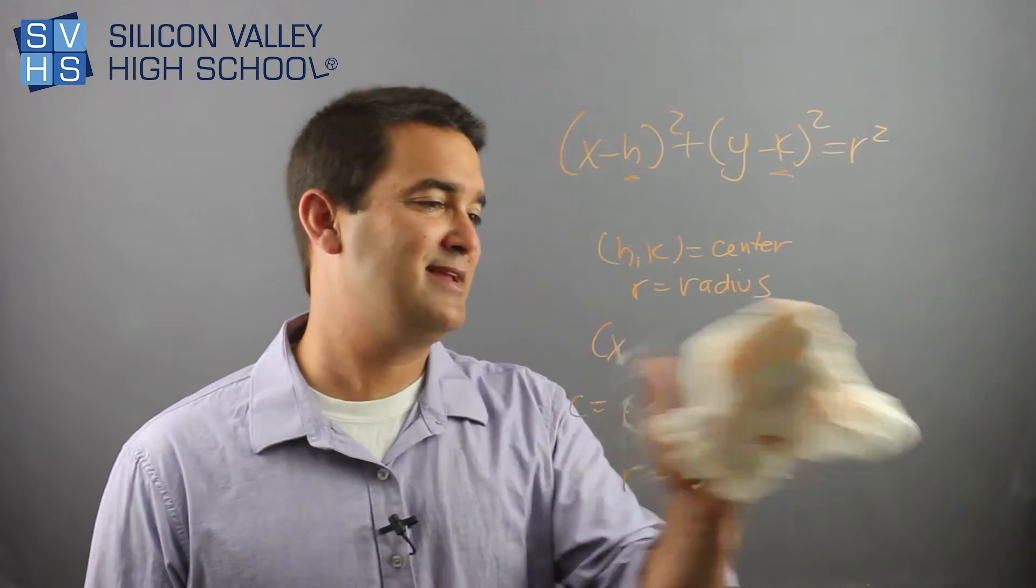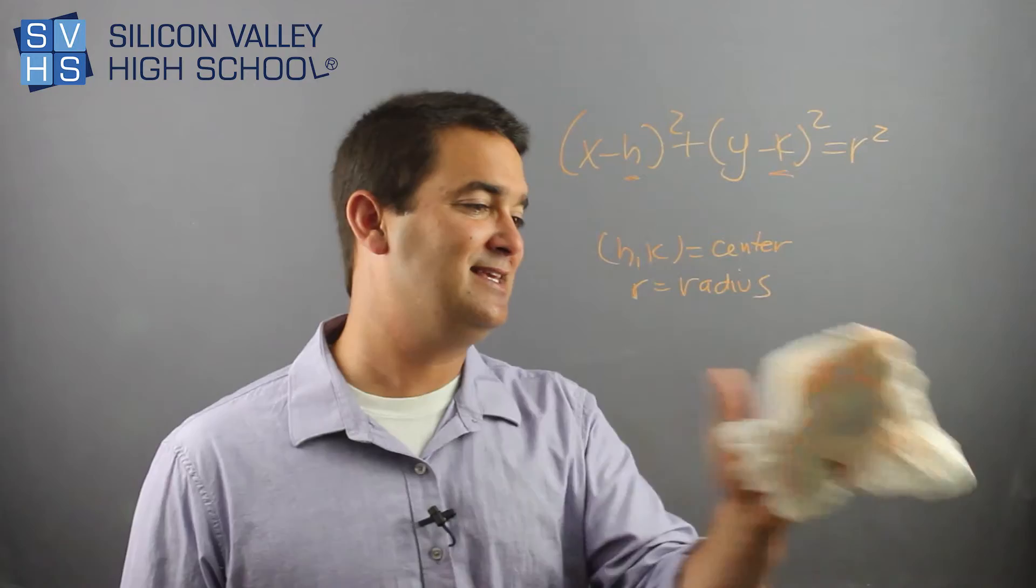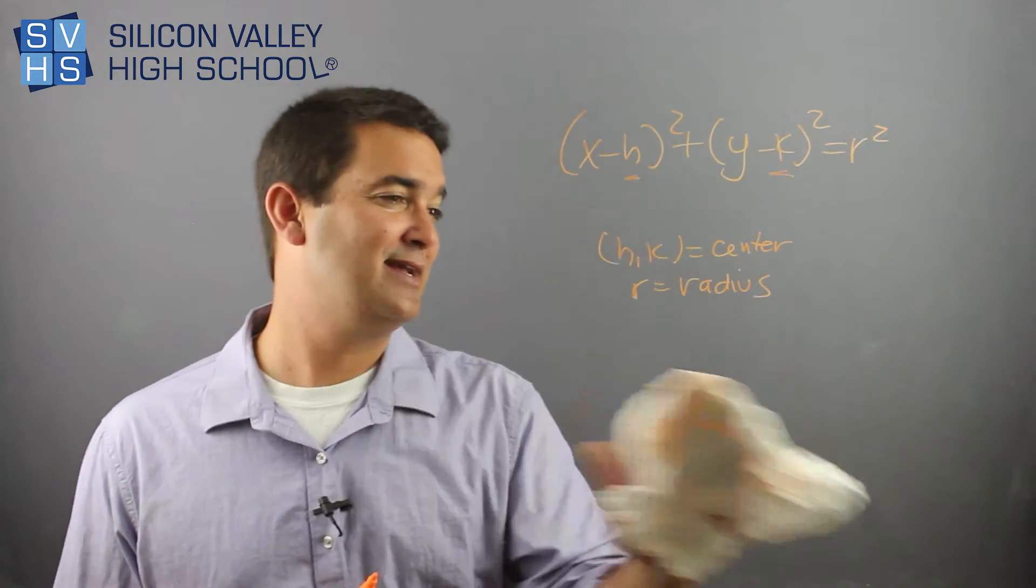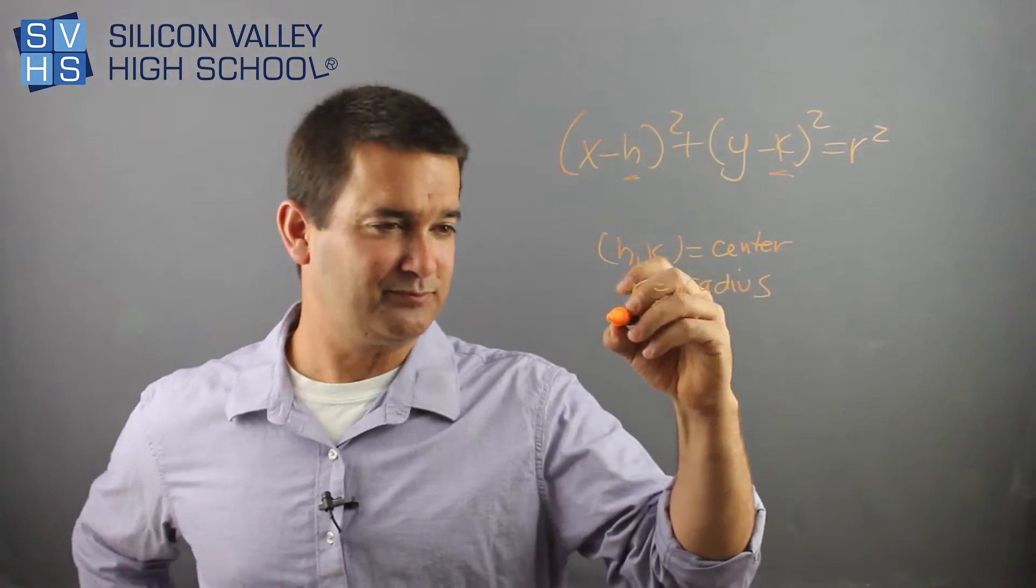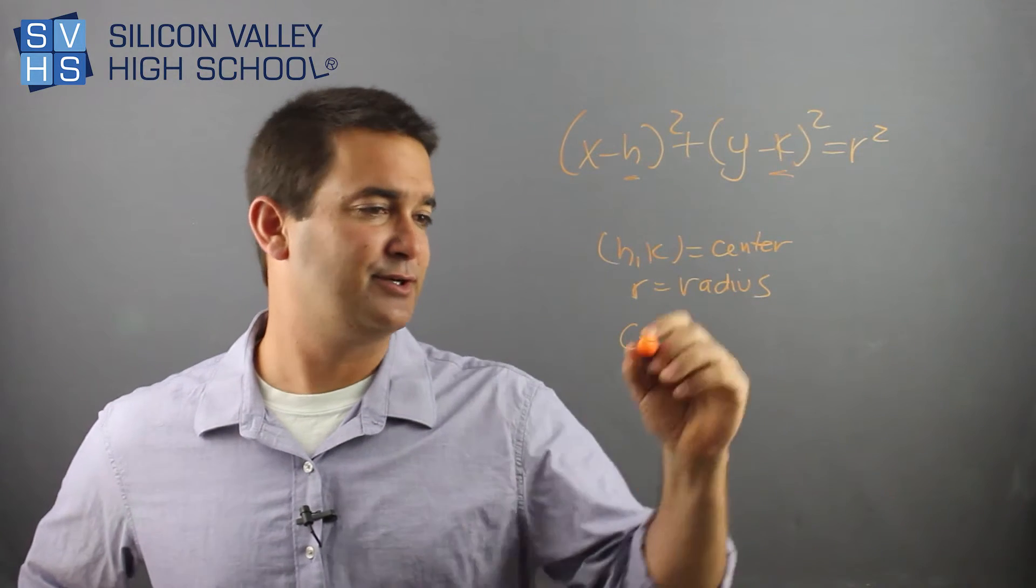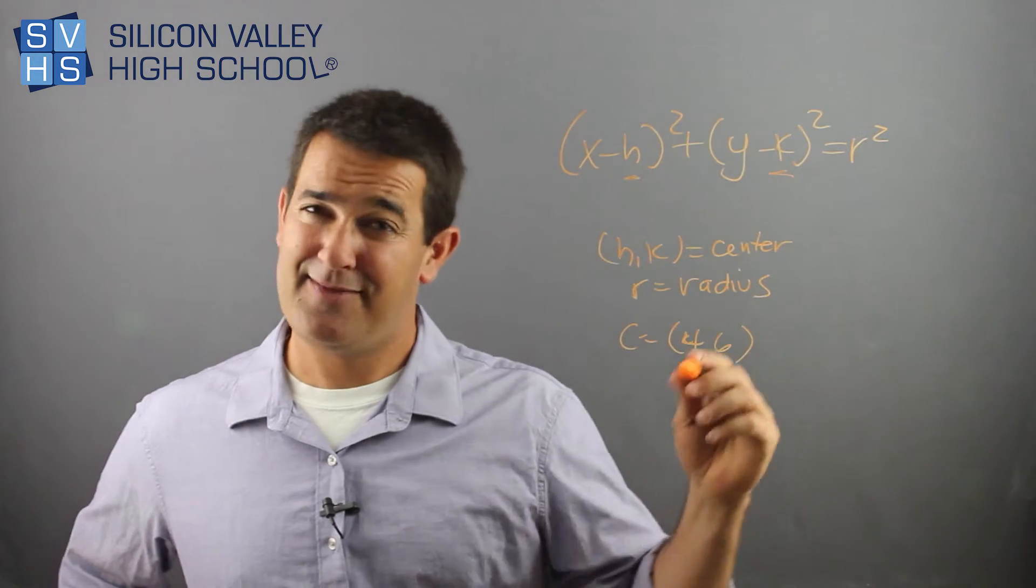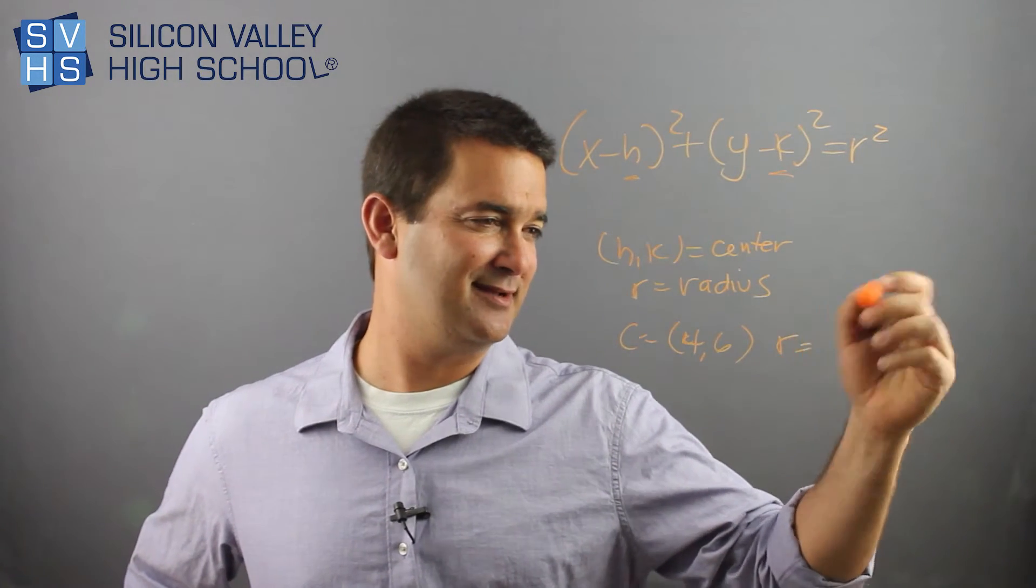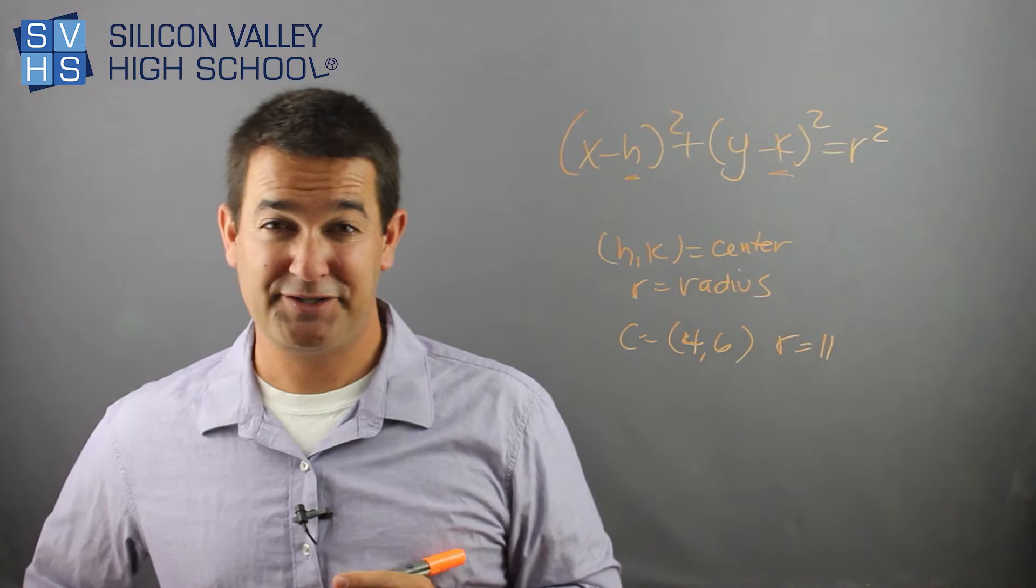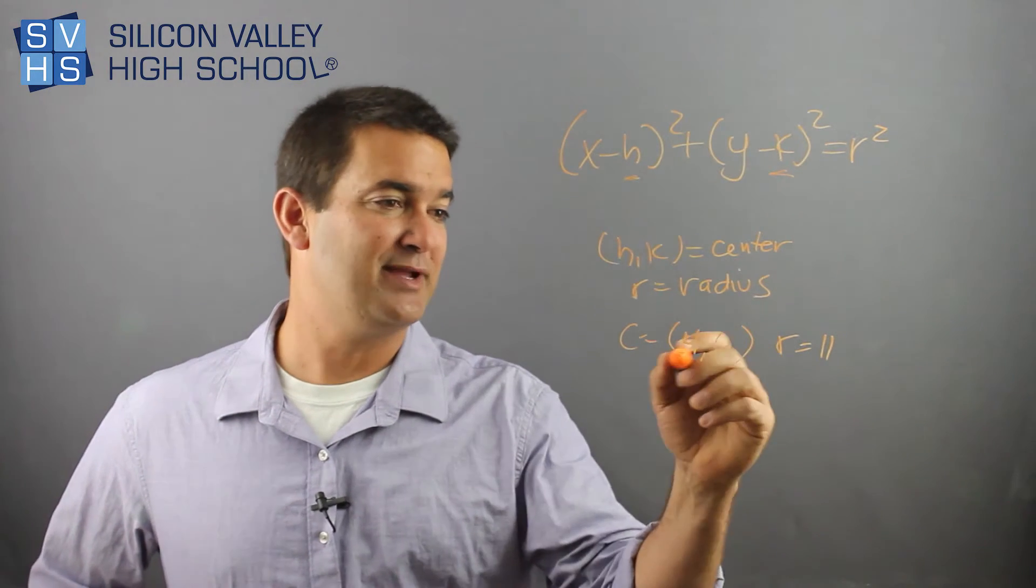Now, another one that's pretty easy is the opposite. Like they might actually give you the center and the radius and tell you to write the equation of a circle. So what if they're like, okay, so the center is, you know, 4, 6, right? And they're like, the radius of this circle is like 11. And they said, give me the equation of this circle. Super easy.